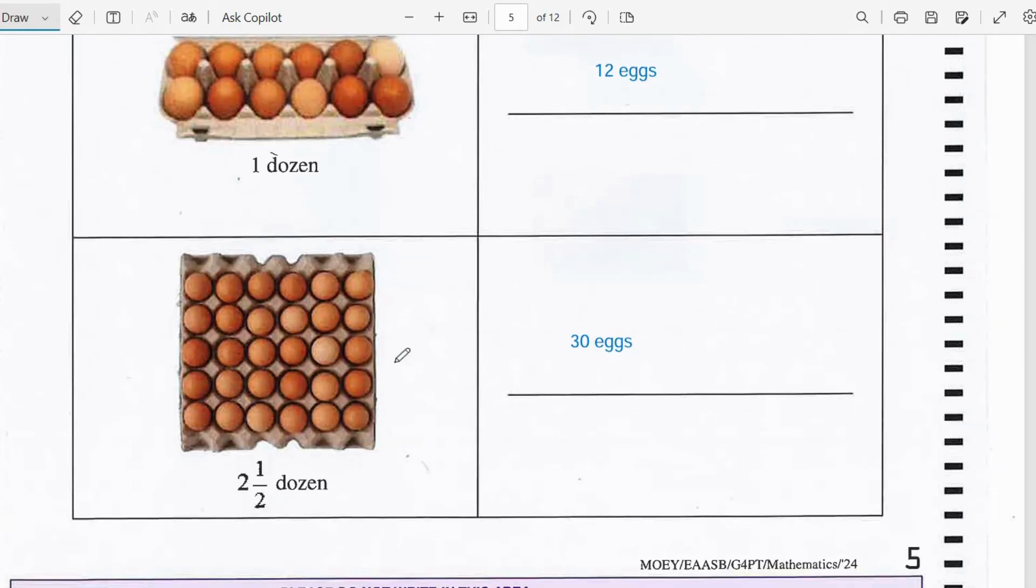And then we have 2 and a half dozen and we could also count 1, 2, 3, 4, 5 down and 1, 2, 3, 4, 5, 6. 6 times 5, that's 30 eggs.